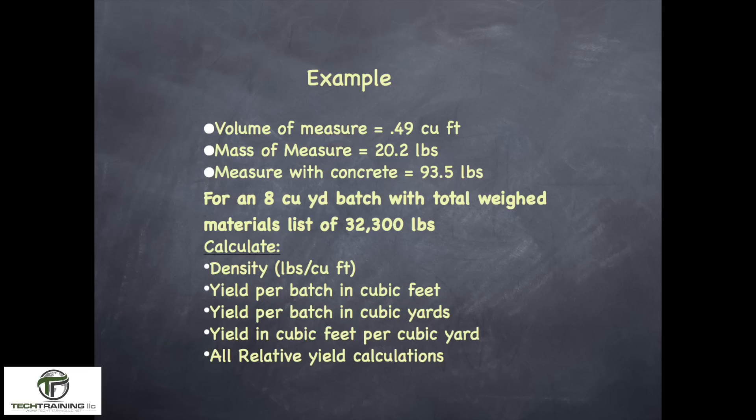So let's go ahead and do an example. Let's assume that the volume of our measure, or our bucket, is 0.49 cubic feet. We've weighed up that bucket, and the bucket weighs 20.2 pounds. We've now filled it with concrete, and the bucket and the concrete weigh 93.5 pounds. We know that we've designed for an 8 cubic yard batch, and the total weight of all of our materials is 32,300 pounds. From these numbers, we're going to calculate the density in pounds per cubic foot, the yield per batch in cubic feet, the yield per batch in cubic yards, the yield per batch in cubic feet per cubic yard, as well as all of the relative yield calculations.